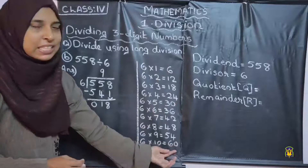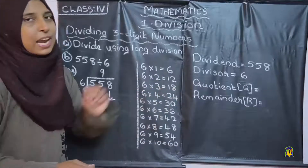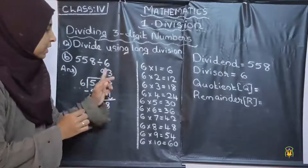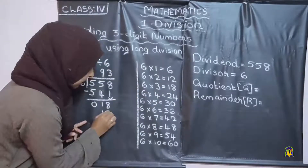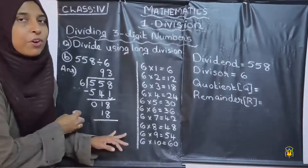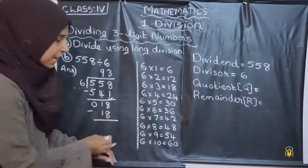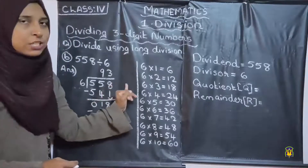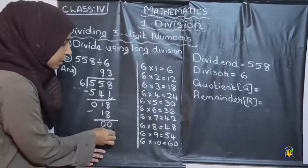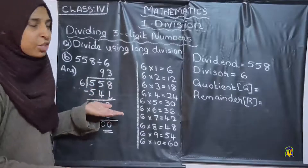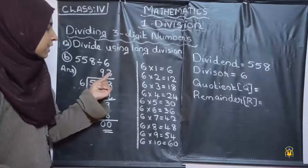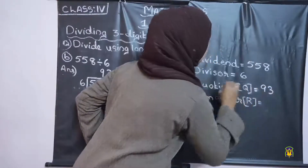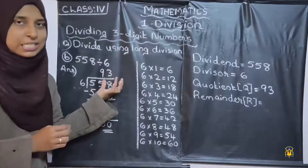Check whether we are getting 18 as the product — yes, 6 into 3 is equal to 18. So we can write 6 into 3; we write 3 above 8, and 6 into 3 is 18. Next step, we want to subtract. 8 minus 8 is 0 and 1 minus 1 is also 0. There is no other number to bring down, so we can stop here. The answer in division is the number above — that is 93, called the quotient. Quotient is 93, and the remainder is also 0.